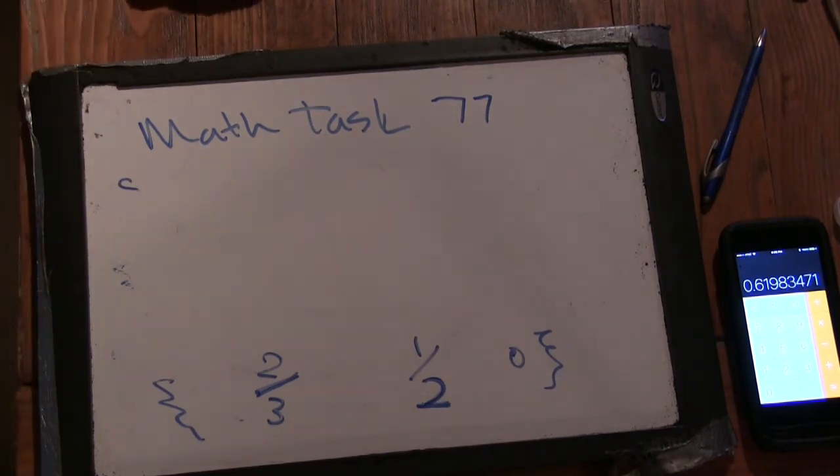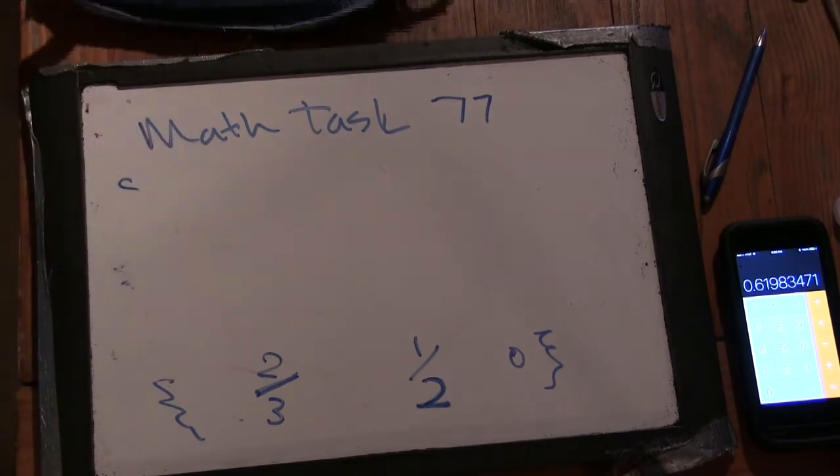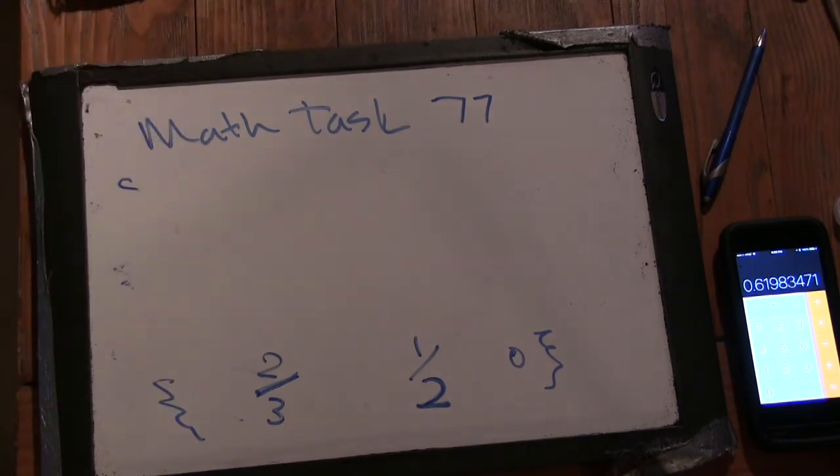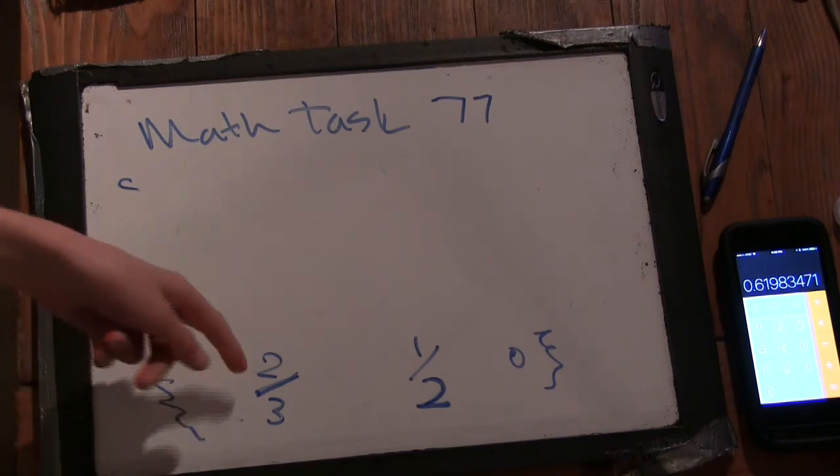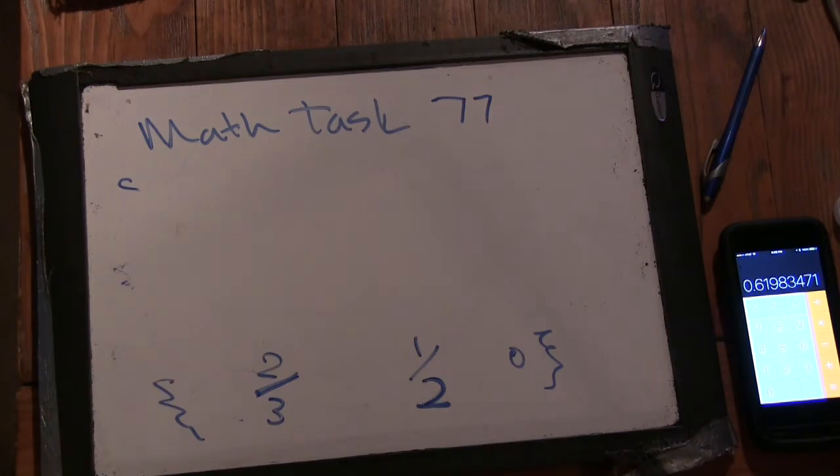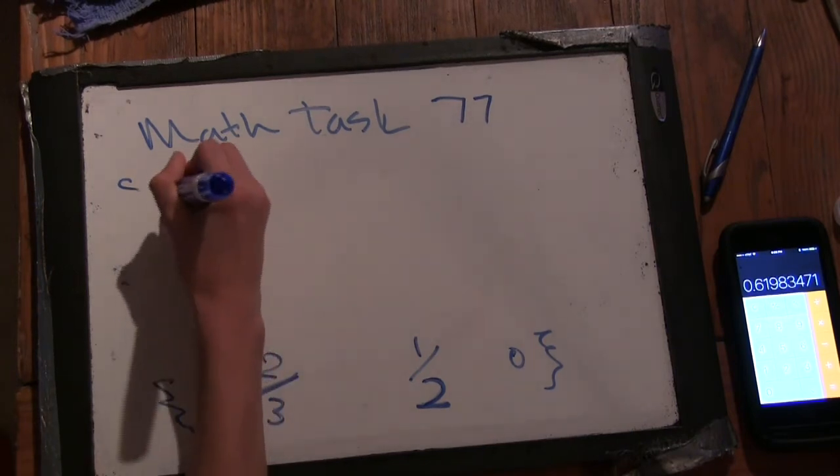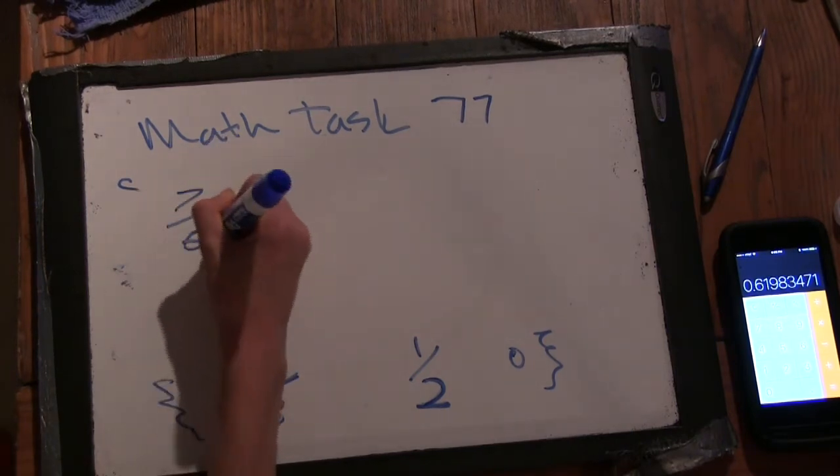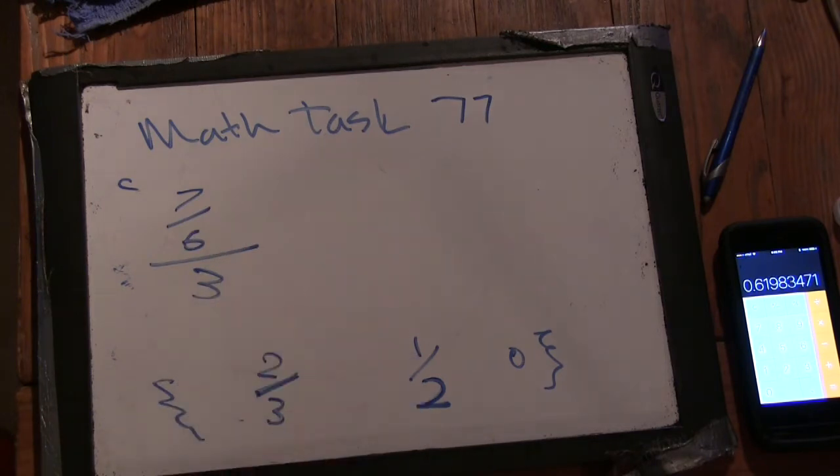So now we have to figure out the average of 2 thirds, 1 half, and 0. So this is all 2 thirds and 1 half. So that's... it's going to be 4 sixths plus 3 sixths... 7 sixths... So 7 sixths divided by 3.